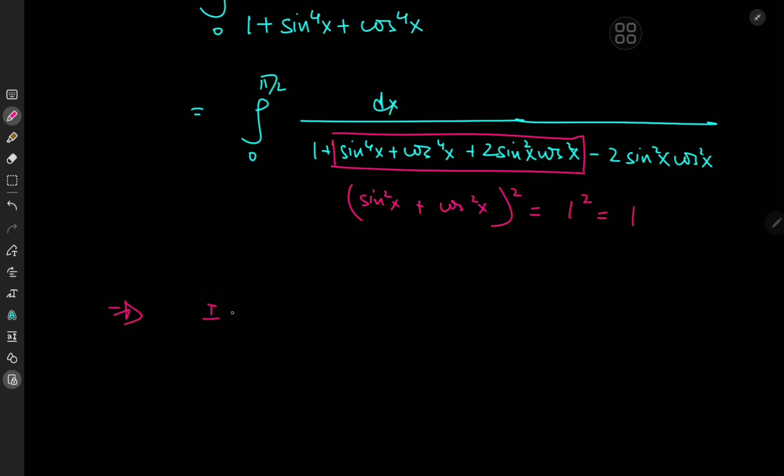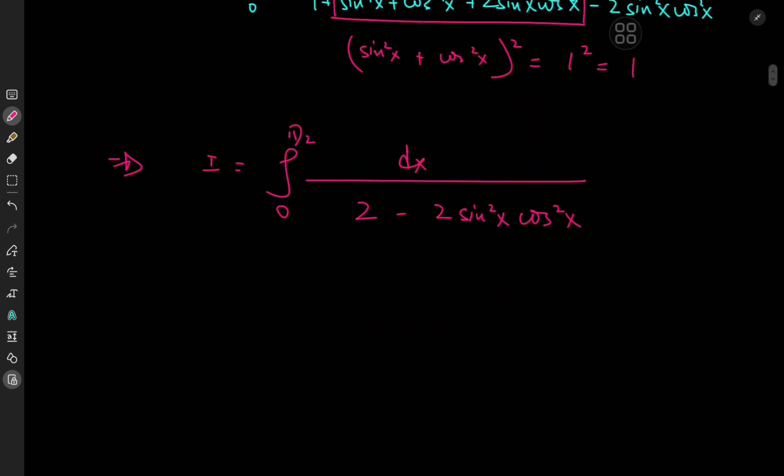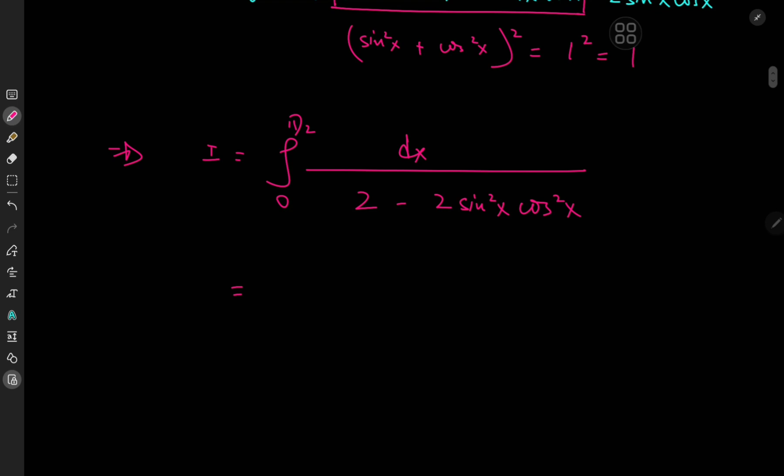This implies that the integral I is now the integral from 0 to pi by 2 of dx divided by 1 plus 1 in the denominator, so that's 2 minus 2 times sine square x times cosine square x. And sine times cosine is related to the double angle formula for the sine function.